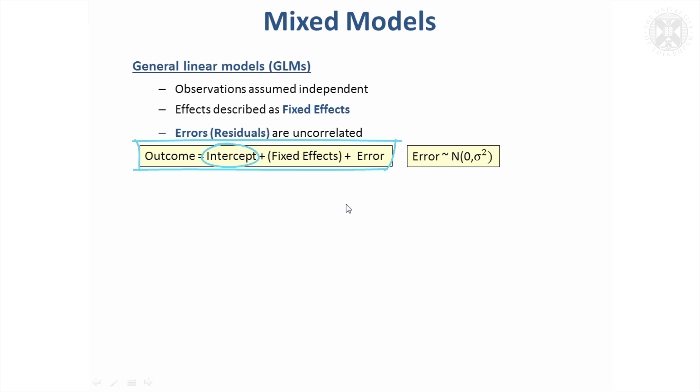But you'd have something called an intercept, which is a constant value, a series of things that you're fitting in the model, and I'm calling them fixed effects here to differentiate them from random effects, which we'll use in mixed models. So things like your treatment effect, time, anything that you want to fit in the model could be defined as a fixed effect, and then you have an error term.